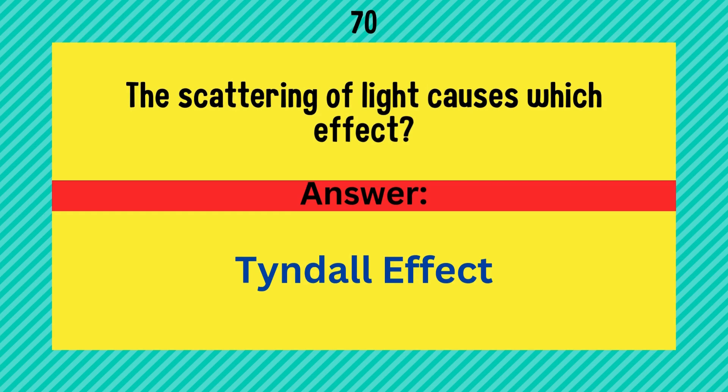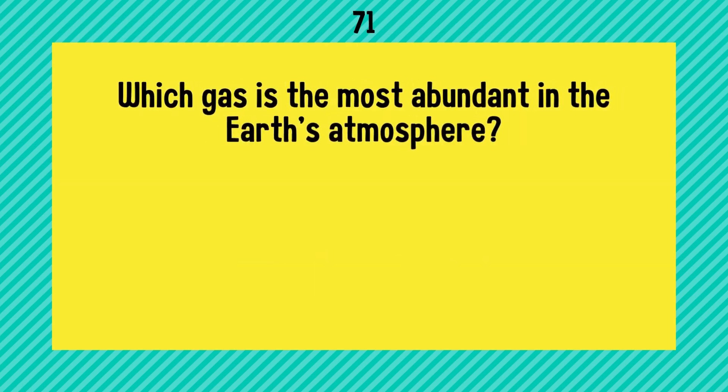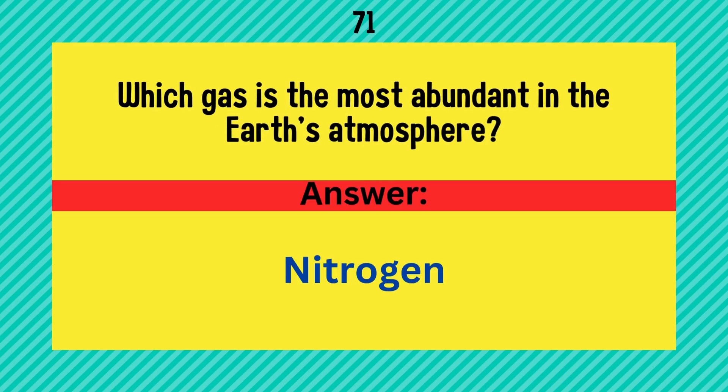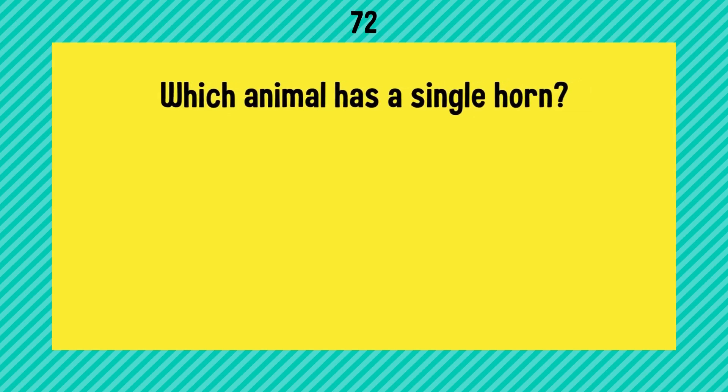Which gas is the most abundant in the earth's atmosphere? It's nitrogen. Which animal has a single horn? Answer is rhinoceros.